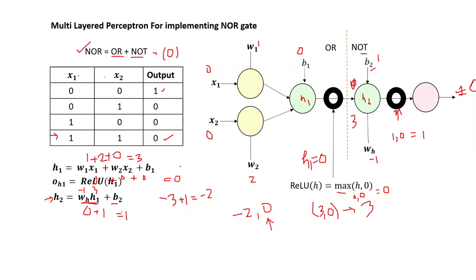For the remaining examples, I highly recommend you to go through the weights and find out how it actually works. You may also take different weight combinations and find out how this NOR gate can be implemented using other values of W1, W2, WH, B1, and B2. That was all for today. If you like my video, please give me a thumbs up and share it with your friends. Thank you for watching.